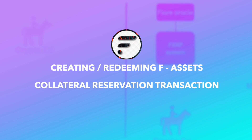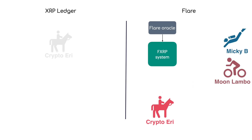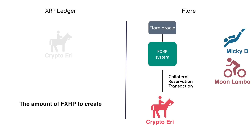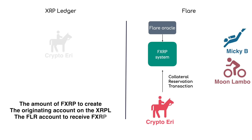Collateral reservation transaction. CryptoEri also has an account on the Flare network. In order to safely use the FXRP system, Eddy must reserve collateral against the amount of FXRP she wishes to originate — this is called the collateral reservation. When initiating the transaction, Eddy must specify: the amount of FXRP she wishes to create, the originating account on the XRP ledger, the Flare account to receive the FXRP, and the collateral reservation fee, which is currently 0.1% of the value of XRP she wishes to convert to FXRP.